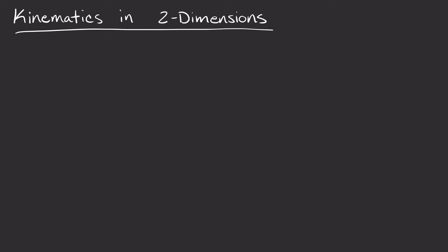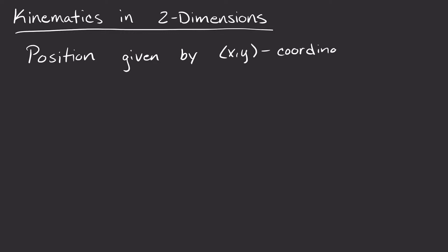In this video, I'm going to talk about kinematics in two dimensions. The big difference in two dimensions versus one dimension is that now instead of designating our position with an x or a y value, our position is given by an x, y coordinate — it has both x and y components. This can be thought of as a vector that points from the origin.